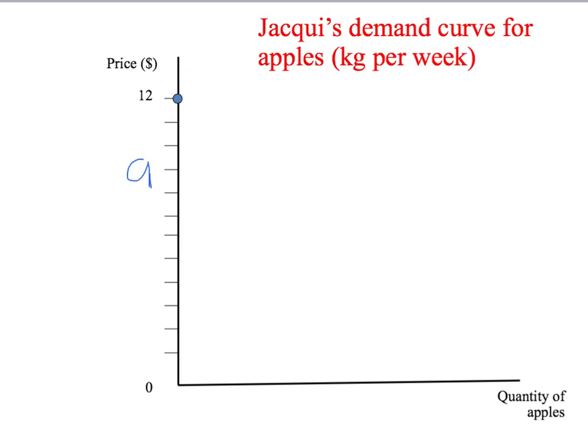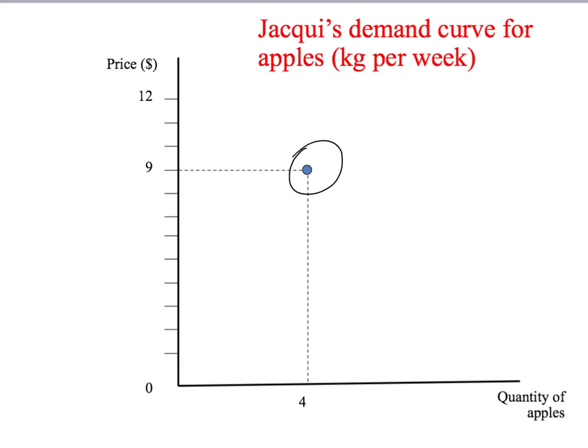Now suppose we said to Jackie, 'Apples are $9 per kilogram, how many would you like to buy?' She says, '$9 is still expensive, but I really like apples. So at a price of $9 per kilogram, I'm happy to buy 4 kilograms of apples.' That gives our second point on Jackie's demand curve: a price of $9 and she wants to buy 4 kilograms of apples.